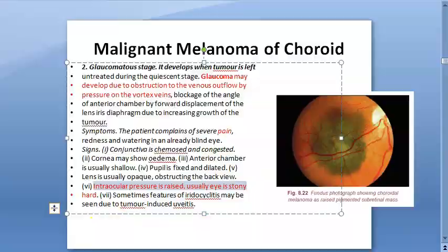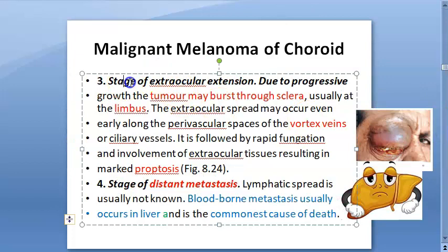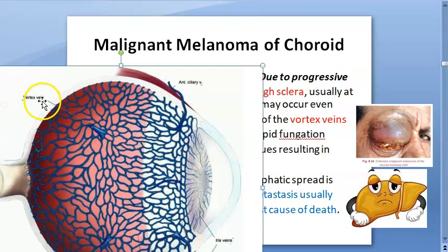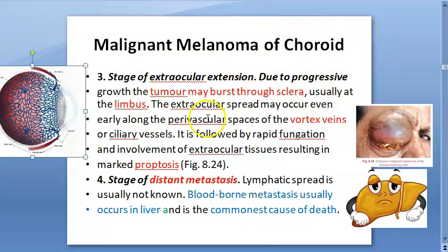Next comes extraocular extension — the tumor bursts through the sclera, usually at the limbus. You can see the vortex veins illustrated here, with one on each side. The tumor will burst through the sclera at the limbus and extraocular spread occurs.